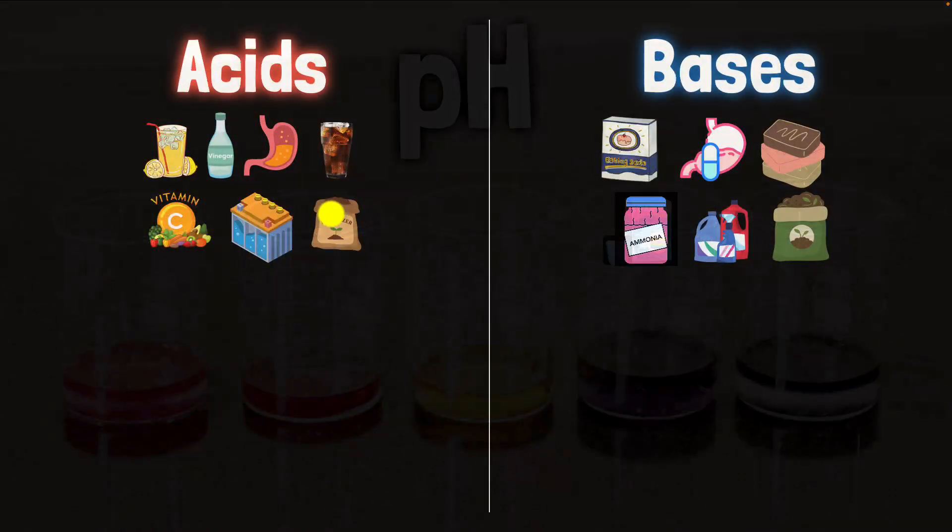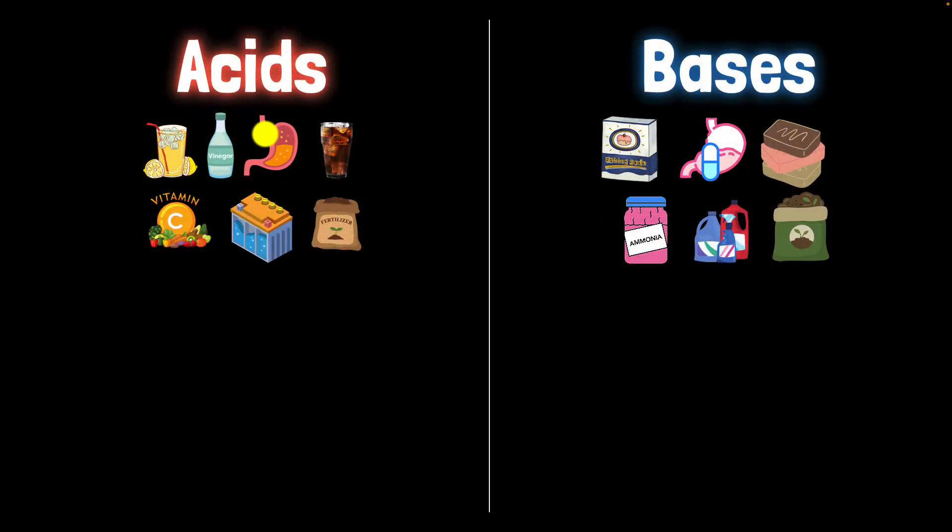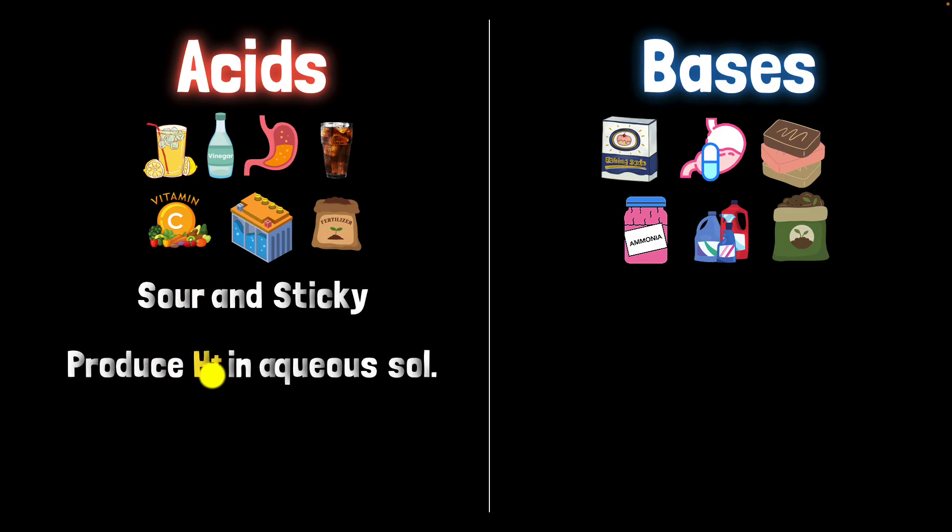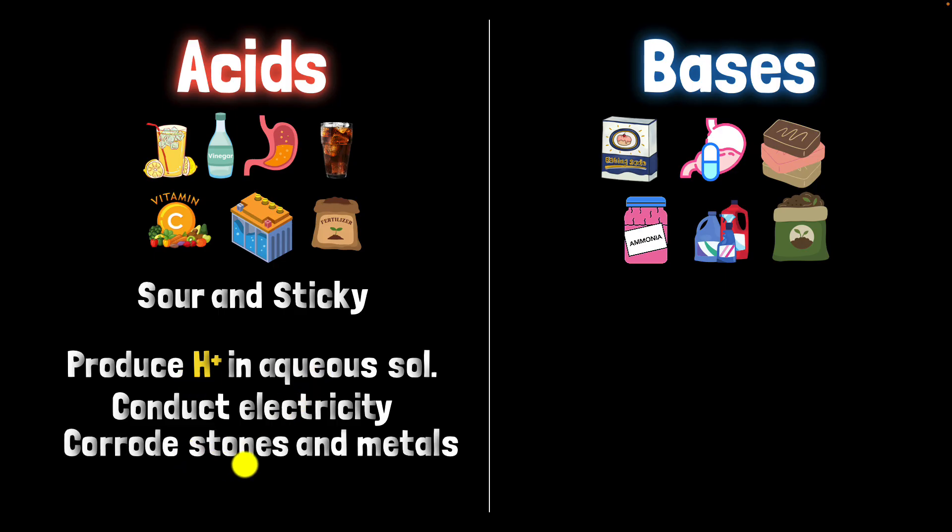Now, before we do that, let's quickly recap what we already know about acids and bases. We started thinking of acids as stuff that are sour and sticky, but we got a little bit more rigorous then we realized that they are actually stuff that produce electrically charged hydrogen atoms in aqueous solutions. And as a result, they conduct electricity because there are charged particles in aqueous solution. And we also learned about their properties like they can corrode stones and metals.